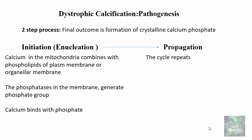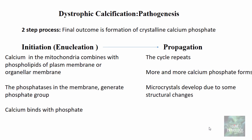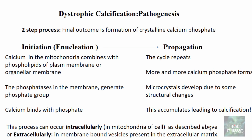In the propagation step, the same cycle repeats — more and more calcium phosphate forms, resulting in the formation of micro-crystals due to structural changes in the calcium phosphate. These micro-crystals accumulate over time, leading to calcification. Dystrophic calcification can occur both intracellularly, as described above in the mitochondria, and extracellularly, where it begins in membrane-bound vesicles present in the extracellular matrix, derived from dead or degenerated cells.